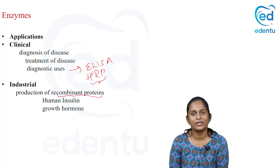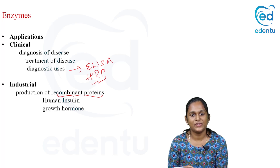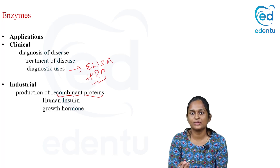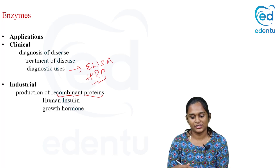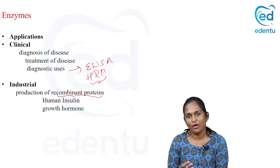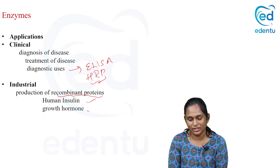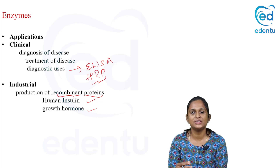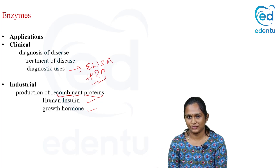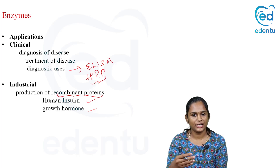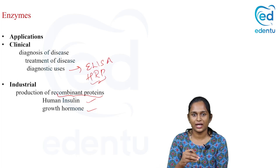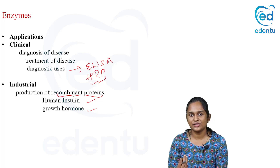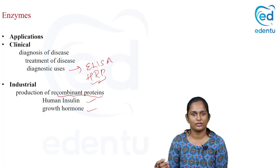For type 1 diabetes mellitus, we have to give insulin to the patient — enzymes are involved in the production of such recombinant proteins. Clinically, enzymes are used to diagnose disease, for treatment, and in diagnostic techniques. Industrially, they are required for the production of hormones and other large molecules.